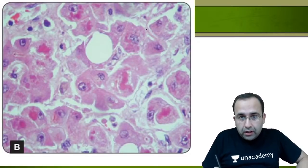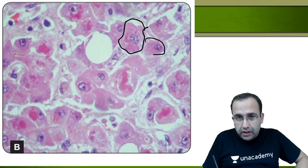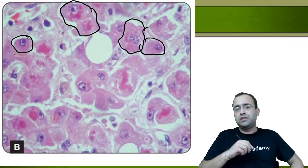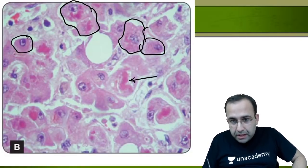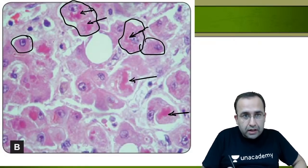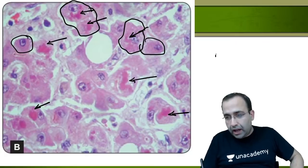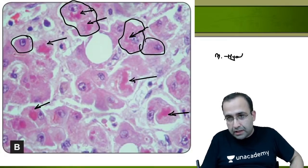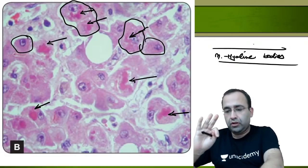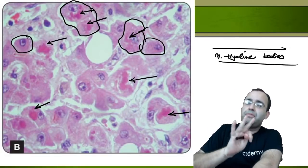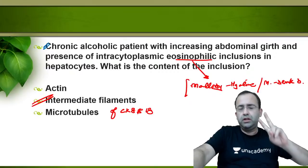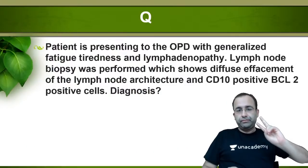Other diseases with Mallory bodies include Wilson's disease, primary biliary cirrhosis (PBC), alpha-1 antitrypsin deficiency, and Indian childhood cirrhosis. These hepatocytes are large polygonal cells with abundant cytoplasm showing intracytoplasmic eosinophilic inclusions. Important note: Mallory bodies are absent in stage 3 of alcoholic liver disease, i.e., they are absent in Laennec's cirrhosis.